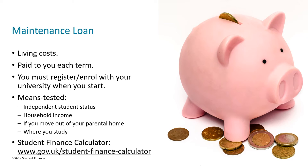The first thing to consider is whether you hold independent student status or not. This status can be obtained for a variety of reasons, but effectively it means that your parents' or guardians' income is not considered when you make a student finance application. If you think this might be applicable to you or you want to find out more, there's a link with further information at the end of this video so you can check that out.